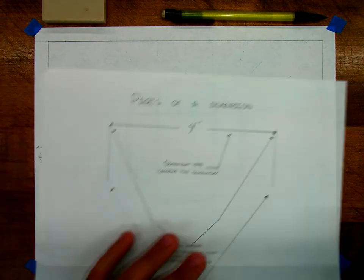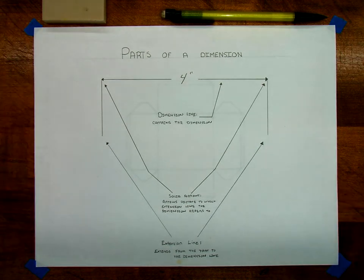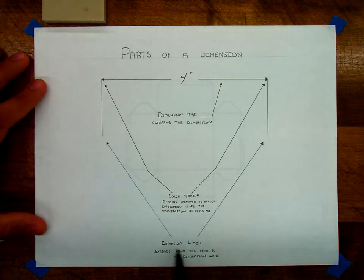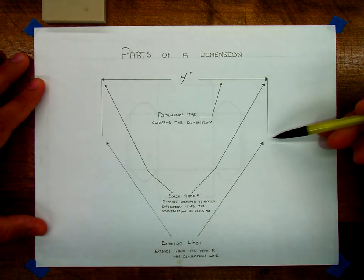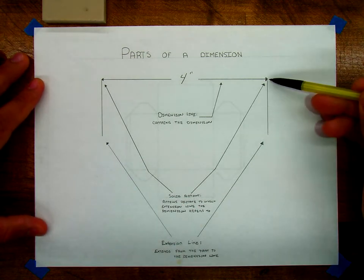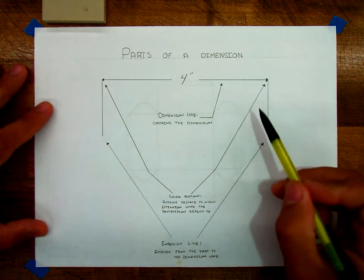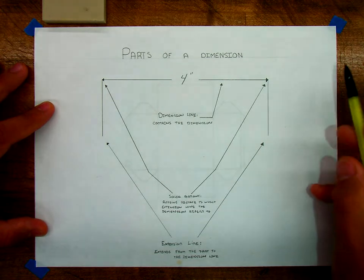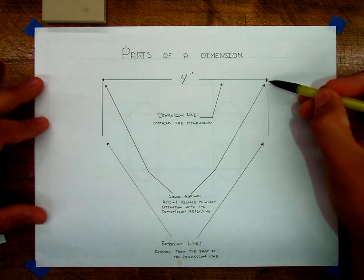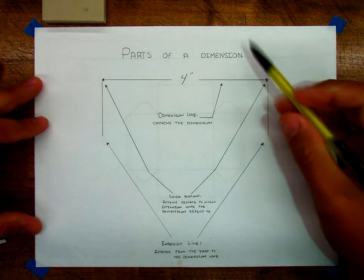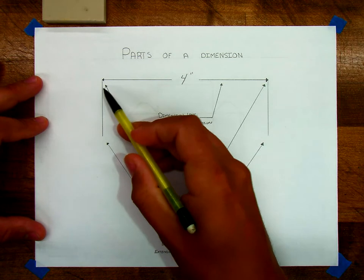So now we're going to talk about creating a dimension. In order to create dimensions, you need to know the parts of the dimension. The different parts include the extension line — these two lines at the end — which extend from the part and go to the dimension line. This long line up here is our dimension line. That's what holds the actual dimension, which in this case is 4 inches.